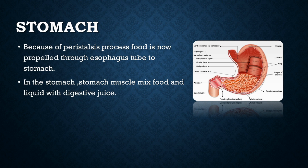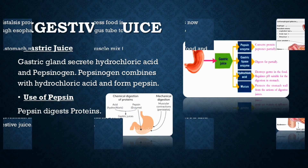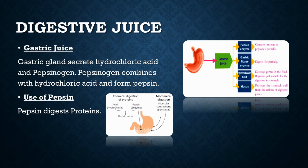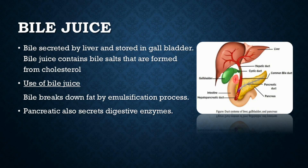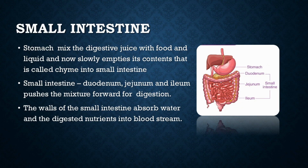In the stomach, stomach muscles mix food and liquid with digestive juices. The first is gastric juice — gastric glands secrete hydrochloric acid and pepsinogen. Pepsinogen combines with hydrochloric acid to form pepsin, which digests protein. Next is bile juice, which is secreted by the liver and stored in the gallbladder. Bile juice contains bile salts formed from cholesterol, and its function is to break down fat by the emulsification process. The pancreas also secretes digestive enzymes. The stomach mixes all the digestive juices with food and liquid, and the resulting mixture — called chyme — is slowly emptied into the small intestine.